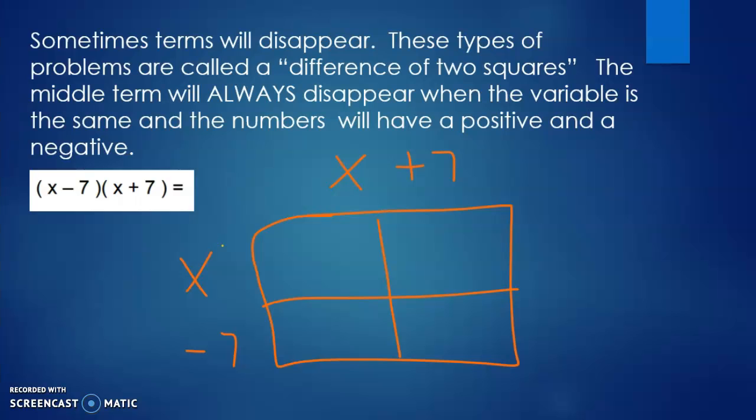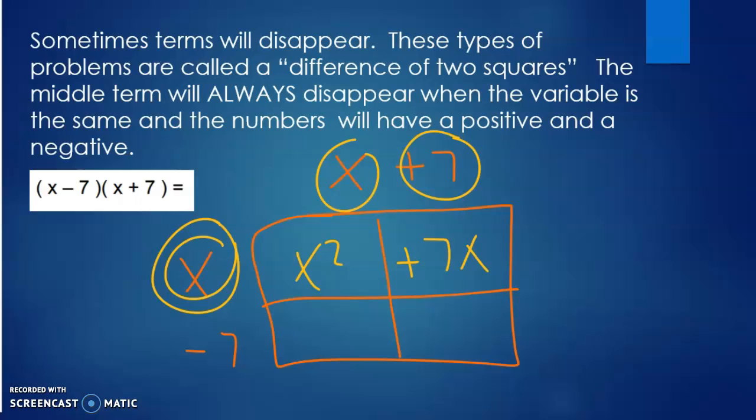And we do x times x, which is x squared. x times positive 7, which is positive 7x. We then come to negative 7 times x, which is negative 7x. And negative 7 times a positive 7, which is a negative 49. Going down the diagonals, which is x squared. A positive 7x and a negative 7x cancels out. And I have a negative 49.